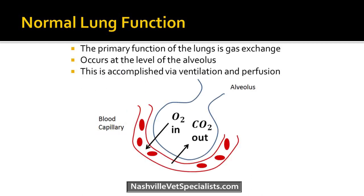The primary function of the lungs is gas exchange, which occurs at the level of the alveolus. Here's a picture of an alveolus filled with oxygen. Gas exchange occurs via ventilation and perfusion — oxygen in the alveolus diffuses into the blood that travels by all the little alveoli in the lung, and then carbon dioxide diffuses from the blood into the alveolus to be expired.